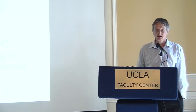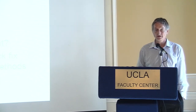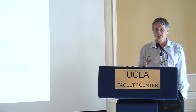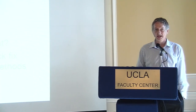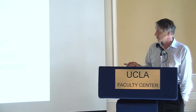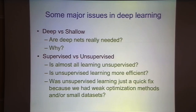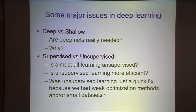Deep narrow nets can also do many things. If your input vectors are binary, any density over binary vectors can be modelled by a deep narrow net that's one unit wider than the input but with exponentially many layers. Another issue is supervised versus unsupervised. Andrew Ng isn't convinced nets need to be deep, but is convinced they need unsupervised learning. Yann LeCun is convinced they need to be deep but flip-flops on unsupervised learning. I believe in both.